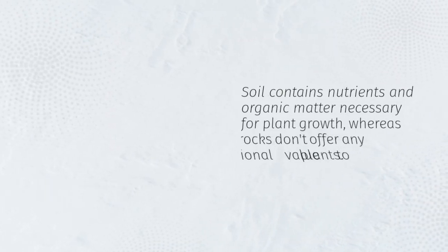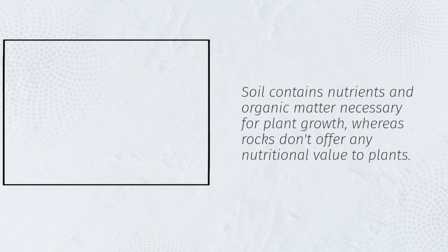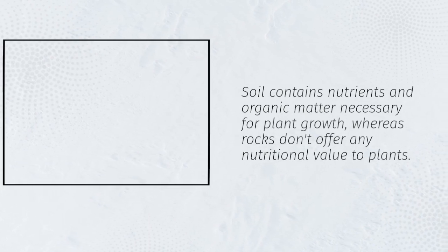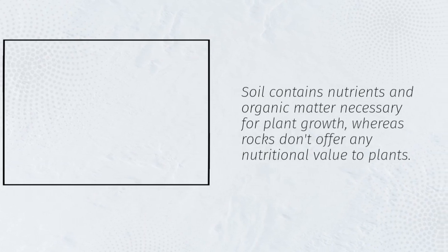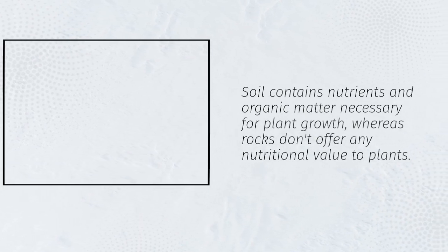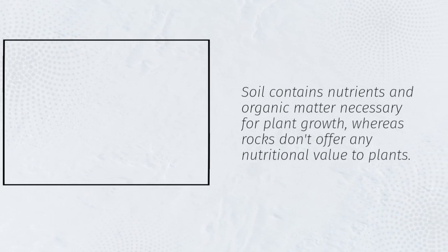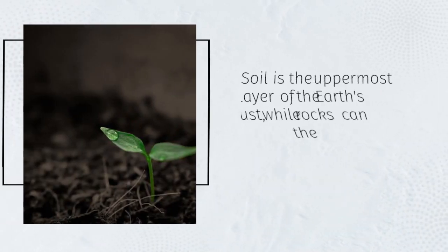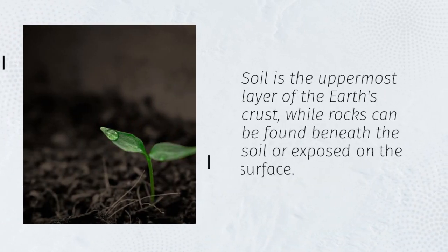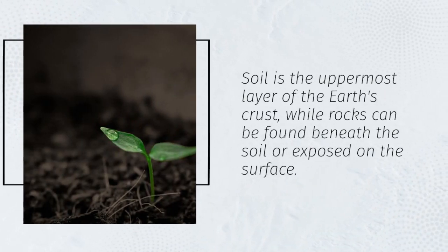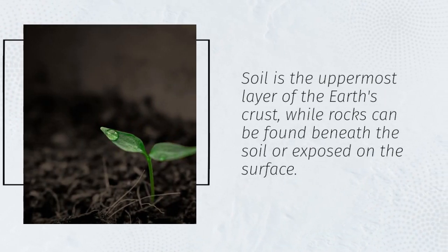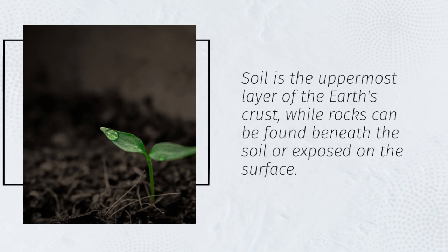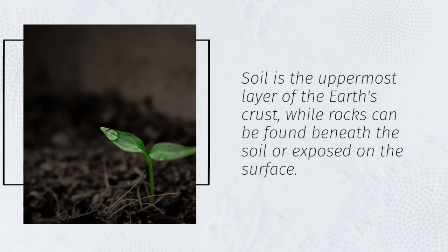Soil contains nutrients and organic matter necessary for plant growth, whereas rocks don't offer any nutritional value to plants. Soil is the uppermost layer of the earth's crust, while rocks can be found beneath the soil or exposed on the surface.